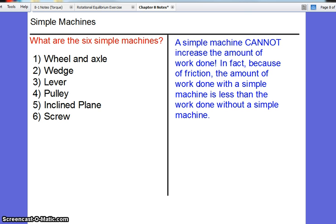Now a simple machine does not increase the amount of work that you do. In fact, because of friction, the amount of work done with a simple machine is less than the work done without. The work that you do not only has to lift the object, like using a car jack to lift a car, but also you have to do work to overcome the friction. So a simple machine makes you do more work.